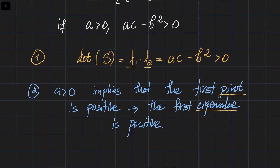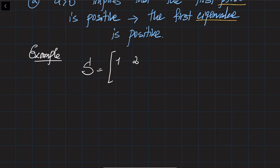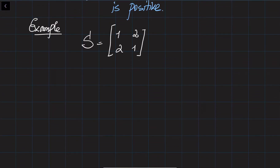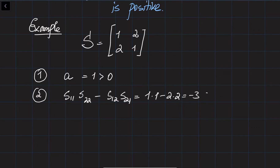Let's do a couple of examples. Given the matrix S with entries 1, 2, 2, 1: to check positive definiteness we check two conditions. First, a = 1, which is positive. Second, a times c minus b squared equals 1 times 1 minus 2 times 2, which equals minus 3, which is negative. So this matrix is not positive definite. We can verify: the eigenvalues sum to 2 and multiply to minus 3, giving eigenvalues plus 3 and minus 1.